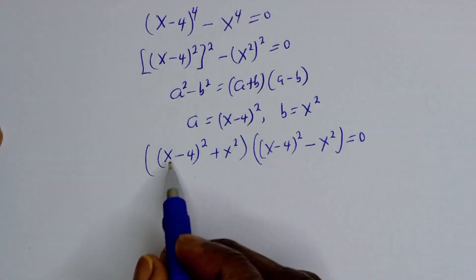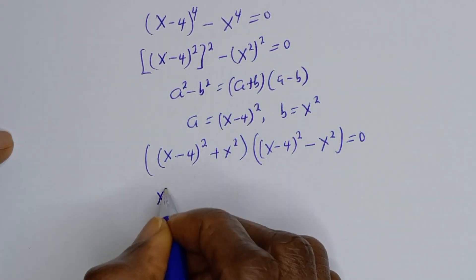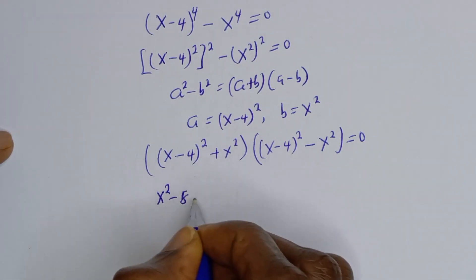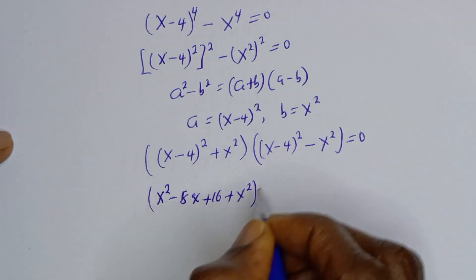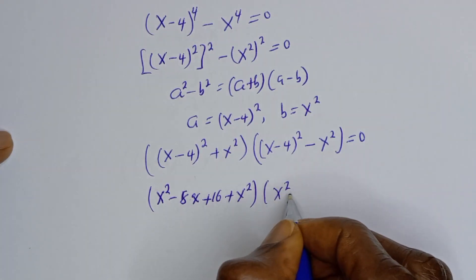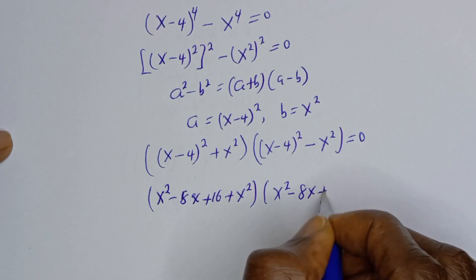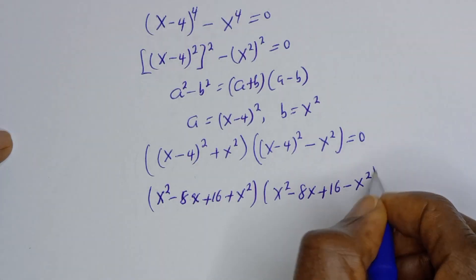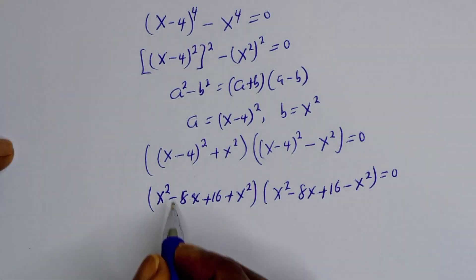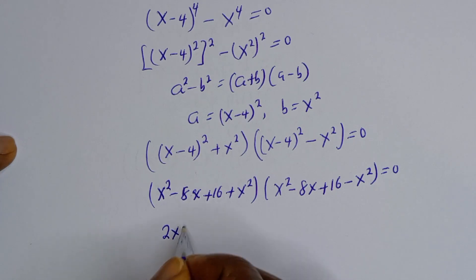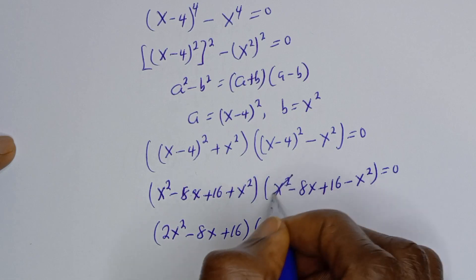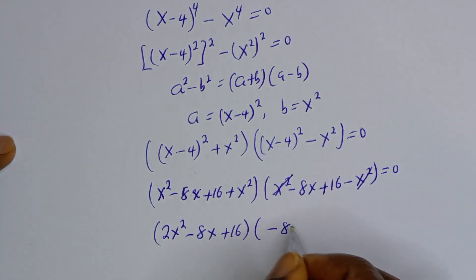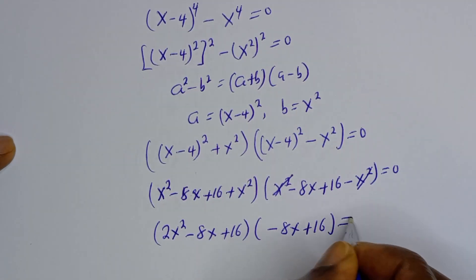Then S minus 4 squared can be written as S squared minus 8S plus 16. So we have S squared minus 8S plus 16 plus S squared, bracket S squared minus 8S plus 16 minus S squared. This simplifies to 2S squared minus 8S plus 16, bracket negative 8S plus 16, is equal to 0.